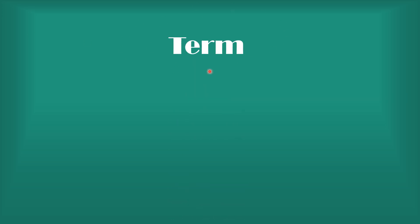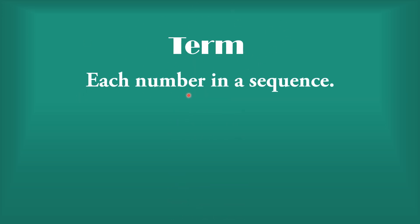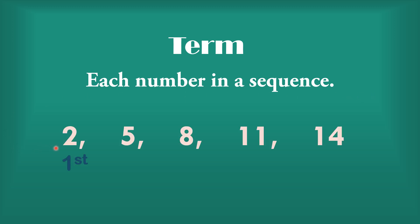Let us identify the meaning of a term. A term is each number in a sequence. In the example sequence 2, 5, 8, 11, and 14: 2 is the first term, 5 is the second term, 8 is the third term, 11 is the fourth term, and 14 is the fifth term.